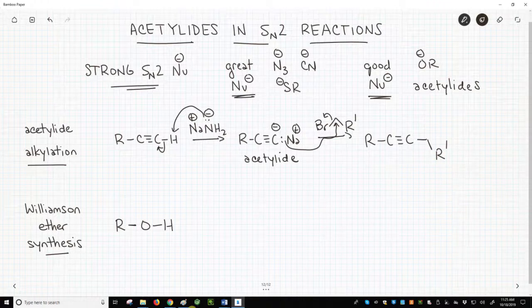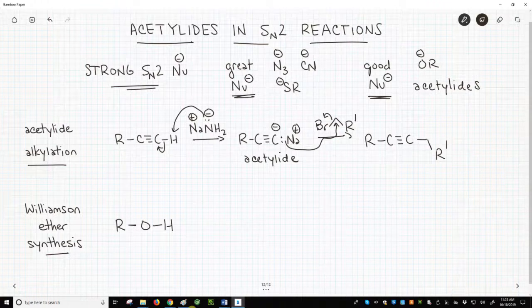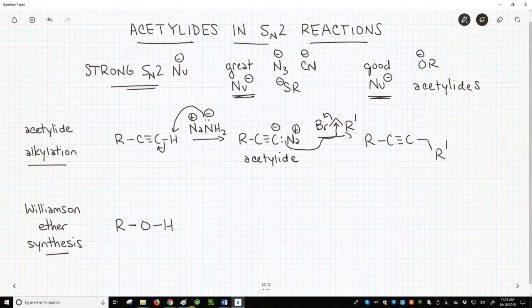SN2 alkylation of acetylides is a great method for building up larger alkyne molecules. Note that this reaction is overall a lot like another reaction called the Williamson ether synthesis on the bottom line of the screen.